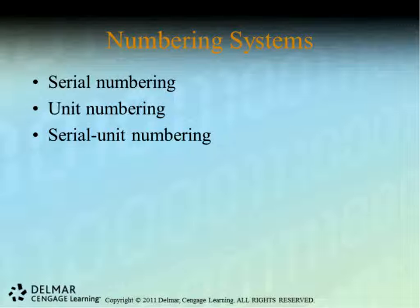There are a couple of other numbering systems you may see. The family numbering system is used in facilities that treat the whole family. A core record number is assigned to the whole family, and then modifiers are appended — for example, the family core number is 12345, the father gets 12345-01, the mother 12345-02, and the first child 12345-03. The major disadvantage is when there is a change in family composition, such as divorce or children leaving the household, requiring the numbering to be changed.